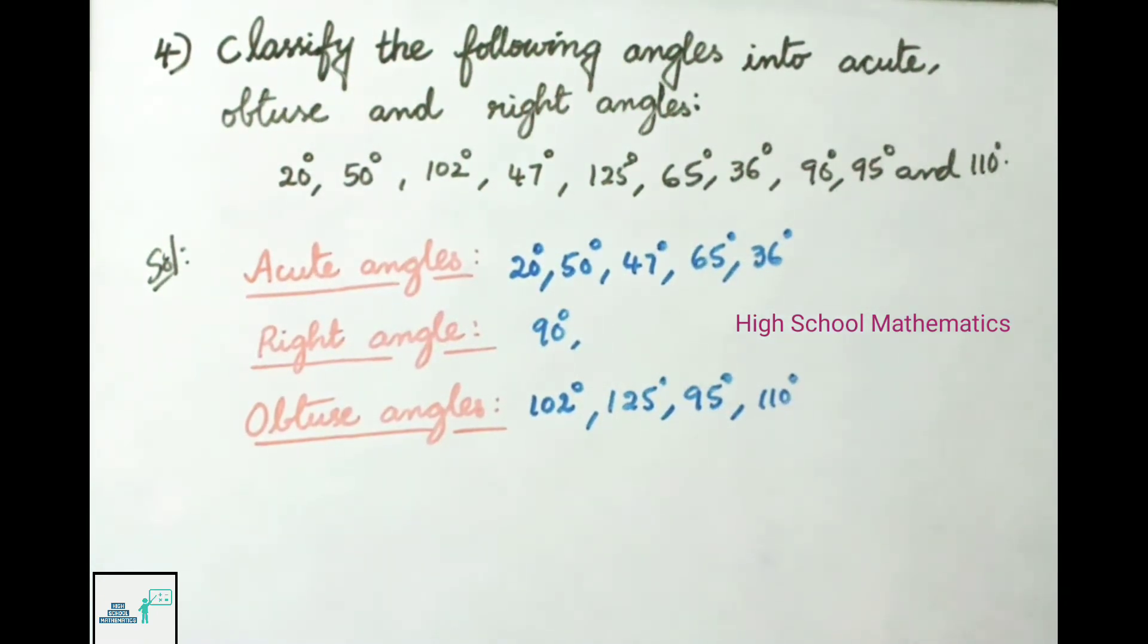The angle which is equal to 90 degrees is called a right angle. So here 90 degrees they have given, so it is right angle.